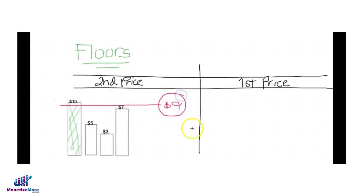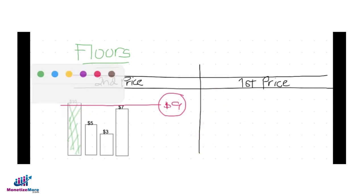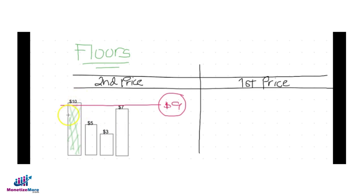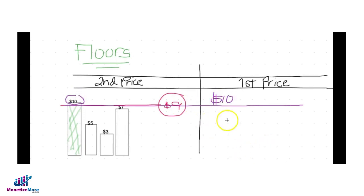In the first price auction with the same set of bids — a $10 bid from Ad Exchange — even if you have a floor of $9, this advertiser will still pay $10. Of course, if your floor is set higher than the highest bid price, that's a different story — Ad Exchange would then be ineligible to participate in the auction.